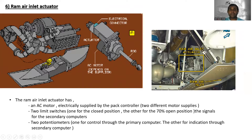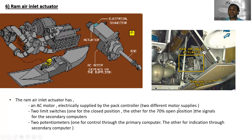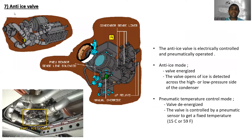The ram air inlet actuator — here is the rod, actuator, electrical connector, and AC motor. The ram air inlet actuator has an AC motor electrically supplied by the pack controller. Two different motors apply, and two limit switches — one for the closed position and the other for 70% open position — provide signals to the secondary computers. Two potentiometers provide one for control to the primary computer and the other for indications with the secondary computer.